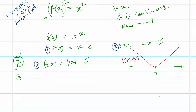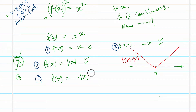There is yet another function. We can also take f(x) = -|x|. Checking continuity: yes, this function is continuous. And f(x)² = (-|x|)² = x². So we have found at least four functions which are continuous and satisfy f(x)² = x²: namely f(x) = x, f(x) = -x, f(x) = |x|, and f(x) = -|x|.